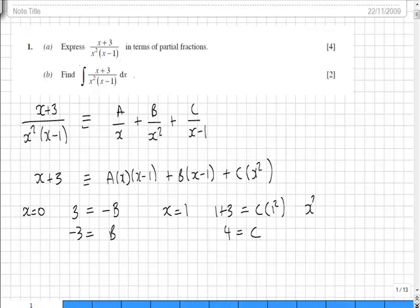Finally, we'll compare the x squared coefficients. On the left hand side we have none. On the right hand side we have A times x squared, so that will be A.